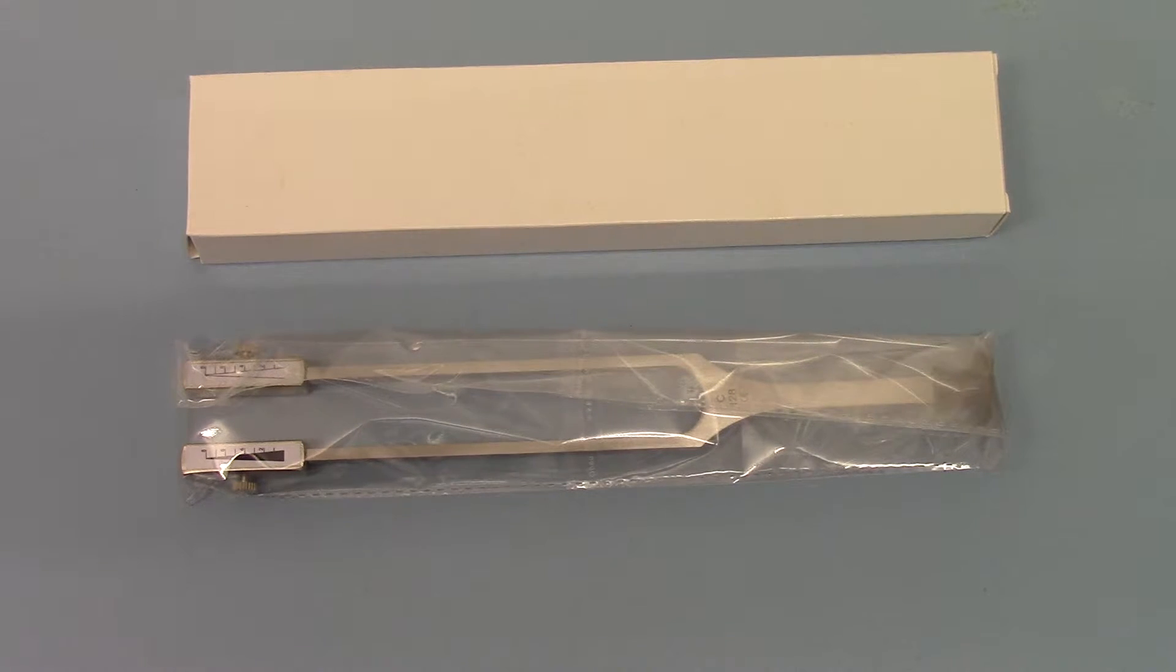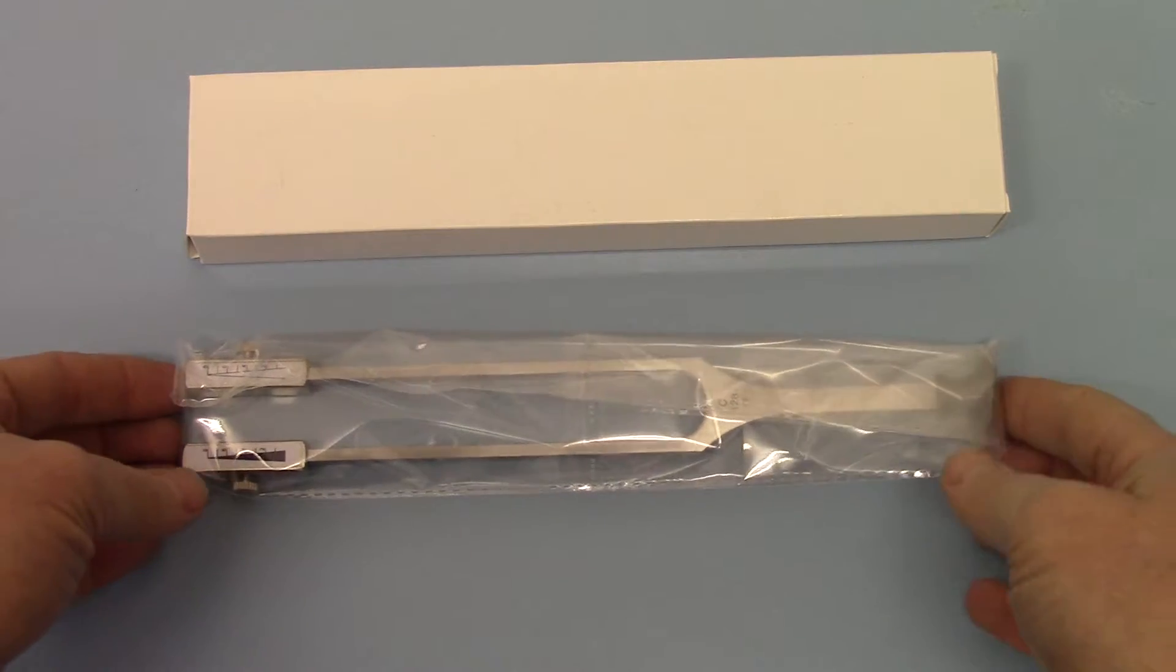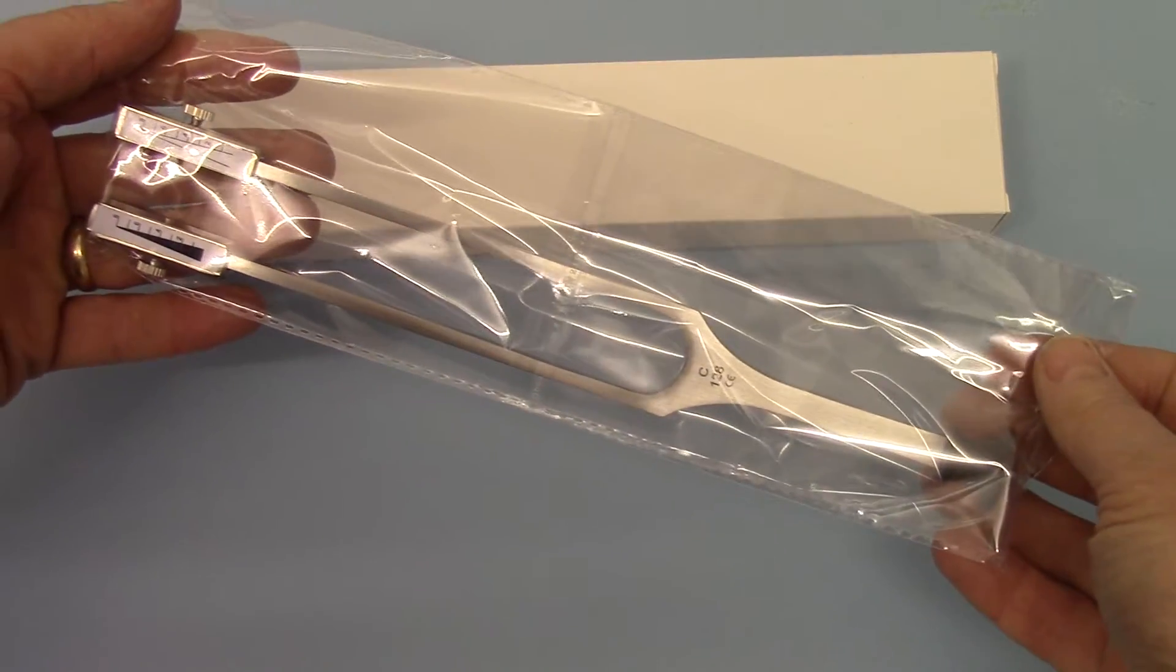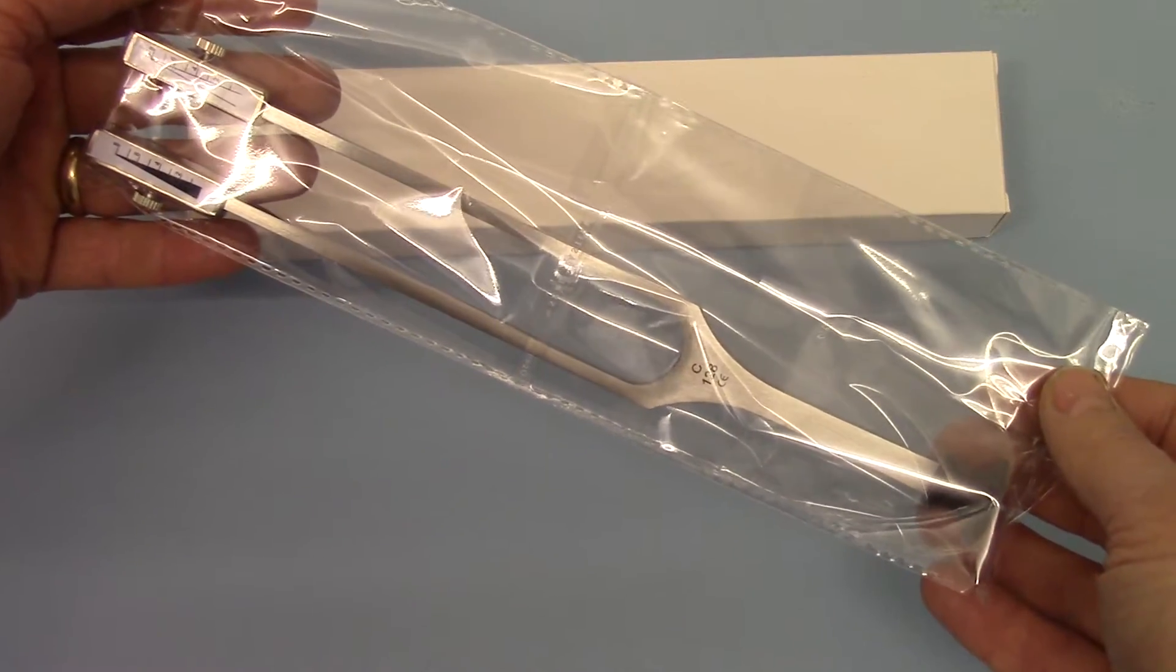Welcome to this product demonstration video of the Rydell Cifer Tuning Fork. The packaging is demonstrated here. It comes in a white generic carton box and then the actual fork is wrapped in this protective cellophane just to keep it in prime condition until it is delivered to you.